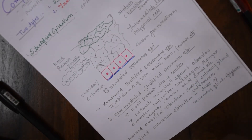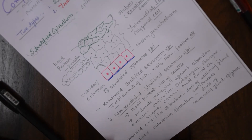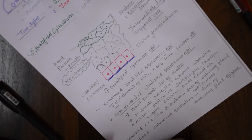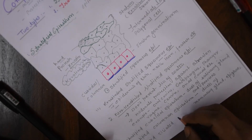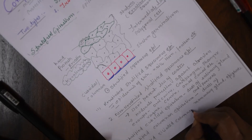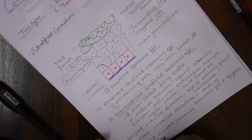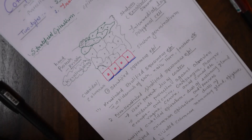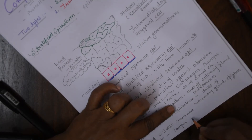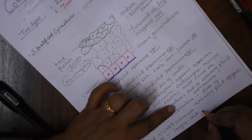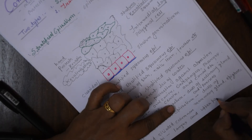Another type is stratified ciliated columnar epithelium, found in the larynx and upper part of the soft palate.